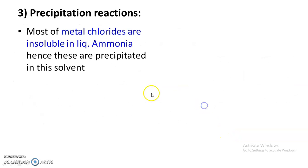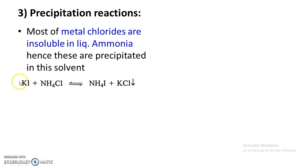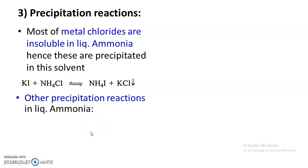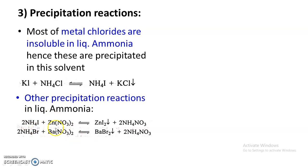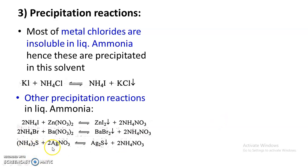Next are precipitation reactions. Most metal chlorides are insoluble in liquid ammonia and are therefore precipitated. For example, potassium iodide mixed with ammonium chloride gives a precipitate of potassium chloride — which is highly soluble in water and cannot be precipitated there. Other examples: ammonium iodide added to zinc nitrate precipitates zinc iodide; ammonium bromide mixed with barium nitrate precipitates barium bromide; and ammonium sulfide mixed with silver nitrate precipitates silver sulfide.